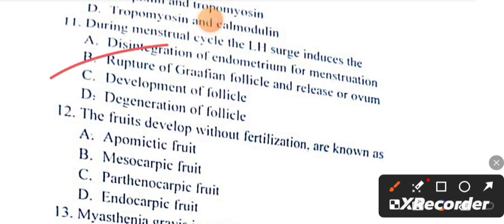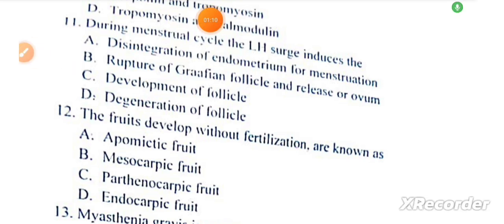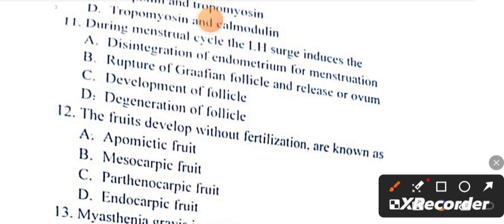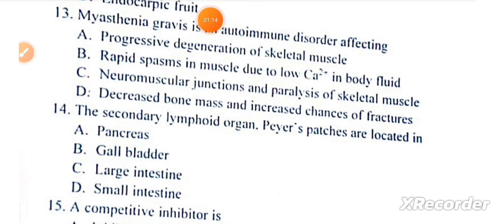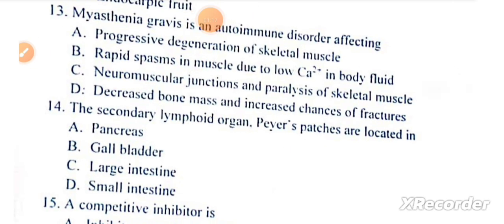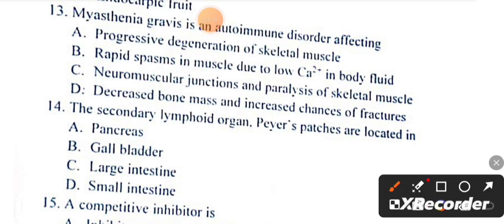Fruits that develop without fertilization are known as parthenocarpic fruits. Question number 13: Myasthenia gravis is an autoimmune disorder affecting neuromuscular junctions.